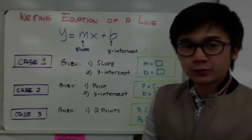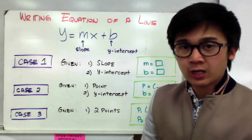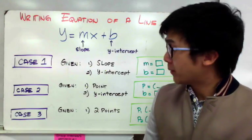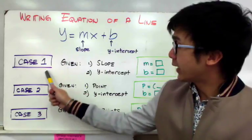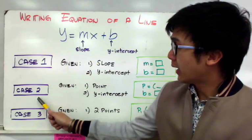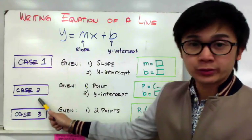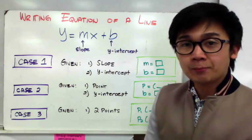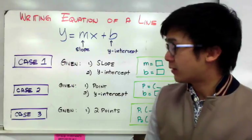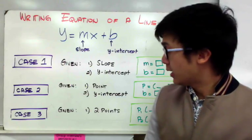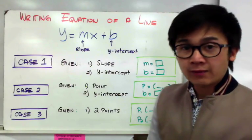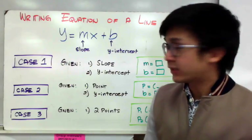We have three cases in writing the equation of a line using the slope-intercept form. We're done with case 1 and case number 2. Now we're going to be working on examples on how to write the equation of a line given 2 points, and we're going to have those examples today.